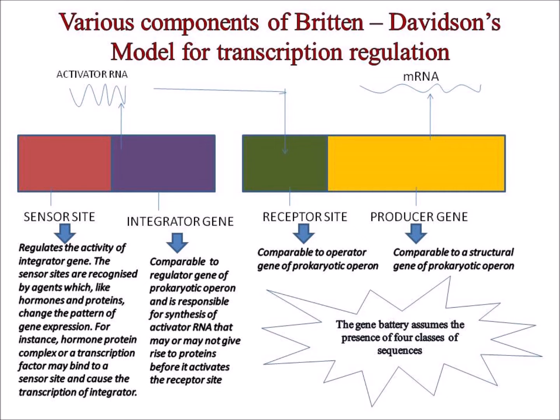The receptor site is comparable to the operator gene of a prokaryotic operon. The producer gene is comparable to a structural gene of a prokaryotic operon. Hence, the gene battery assumes the presence of four classes of sequences.